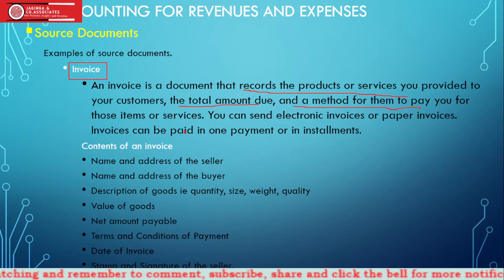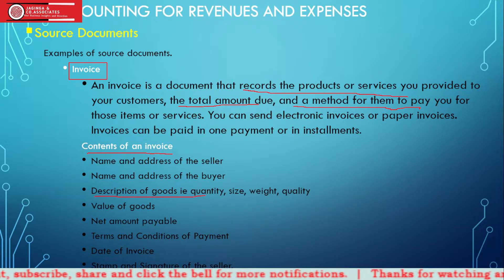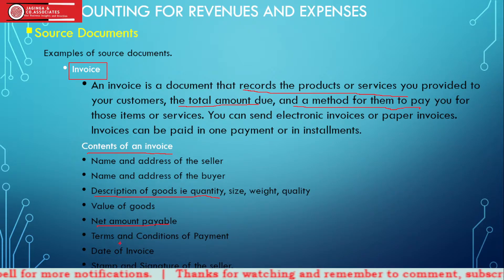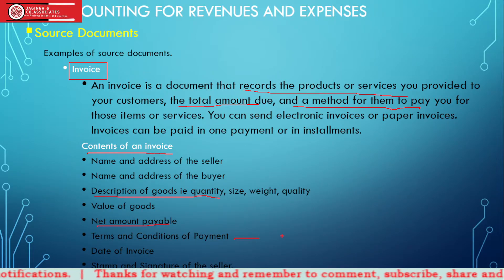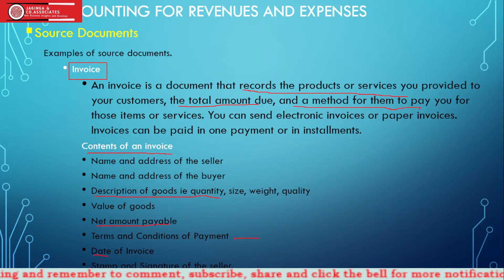Invoices have various contents: the name and address of the seller, name and address of the buyer, a description of goods including quantity, size, weight, and quality, the value of the goods, the net amount payable, the terms and conditions of payment — such as 30 days, 60 days, or cash payment — and the date of the invoice.